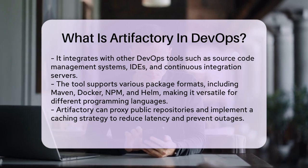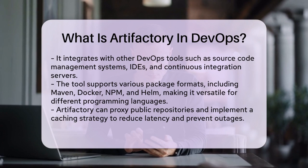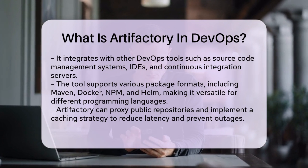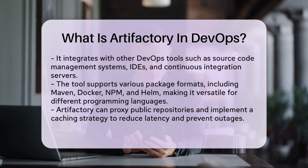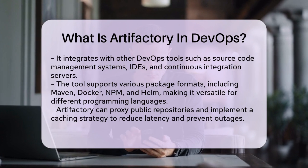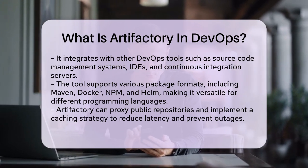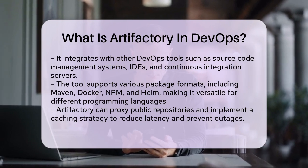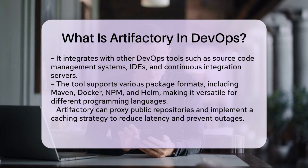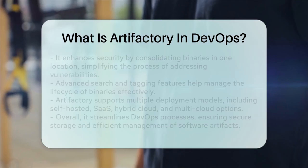Artifactory supports a wide range of package formats, including Maven, Docker, NPM, Helm, and many more. This makes it versatile and able to handle artifacts produced using various programming languages and frameworks. Another important feature is its ability to proxy public repositories and provide a robust caching strategy, which prevents latency and outage issues, ensuring that developers always have access to the resources they need.